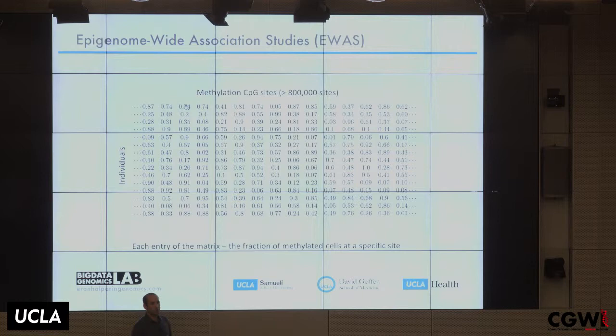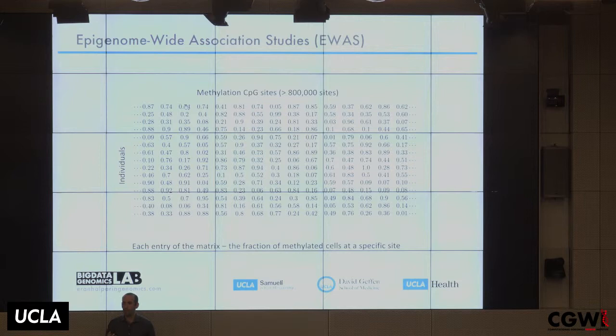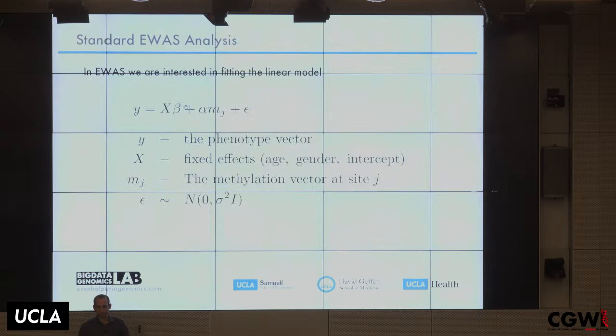In terms of data, we get basically a matrix. The rows are individuals and the columns are sites — positions in the genome. We typically have around 800,000 sites we're looking at in any given study. The number of individuals depends on the study. The entries are numbers between zero and one telling you the fraction of methylation at that position for that individual.